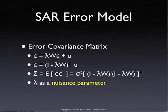As we saw yesterday, in feasible generalized least squares, what you need in the estimation is the inverse of the variance matrix. The variance matrix for a SAR error process is sigma squared times (I minus lambda W)' (I minus lambda W), inverted. In the FGLS process, we use the inverse of this, which boils down to what we call spatially weighted least squares.